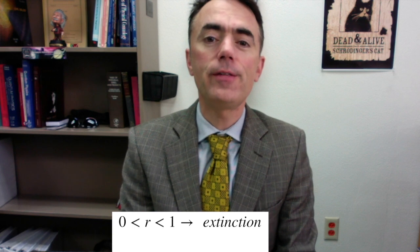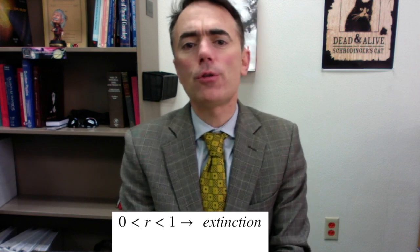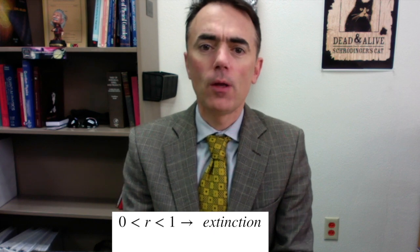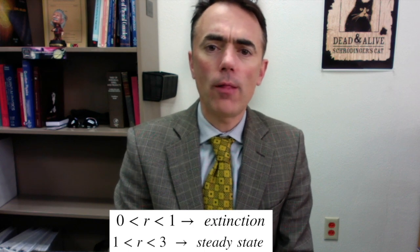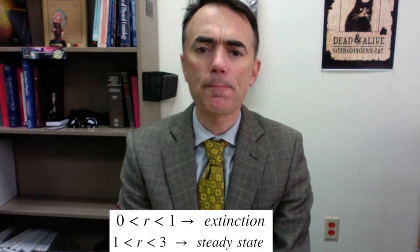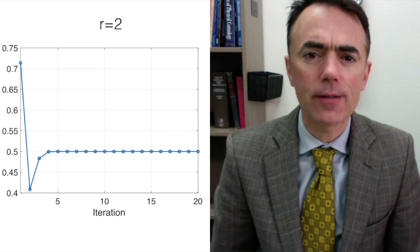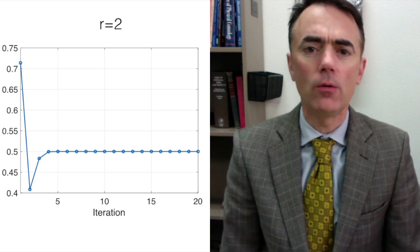What happens to this system now? Well, for r values smaller than 1, the species goes extinct. But for values larger than 1, it doesn't. For r's between 1 and 3, the population grows and reaches a non-zero steady state. As we can see in this figure, the population shows a transient and then a steady value.